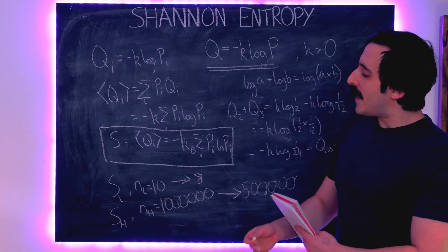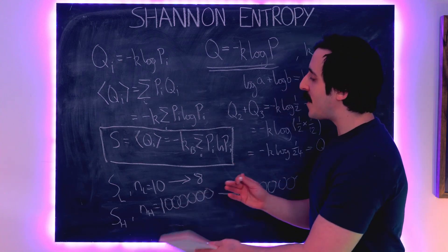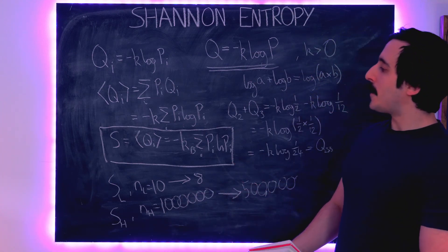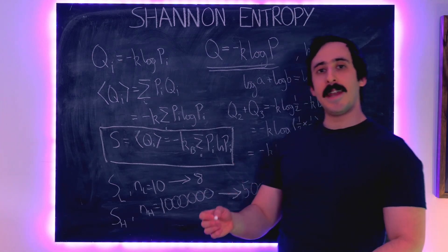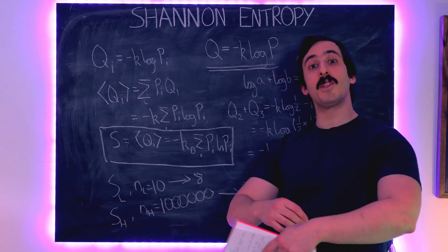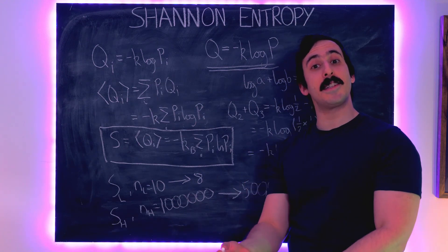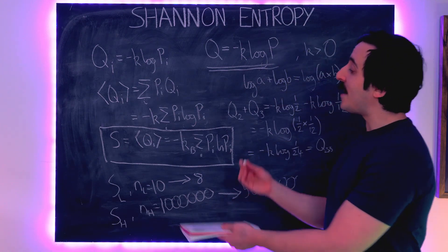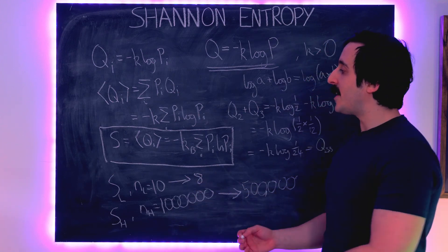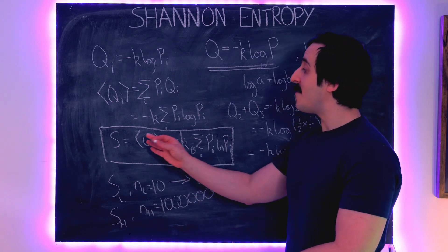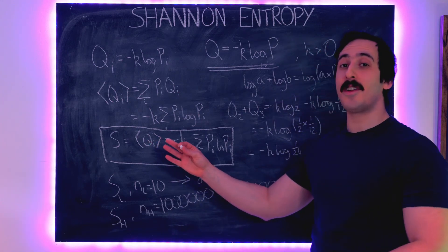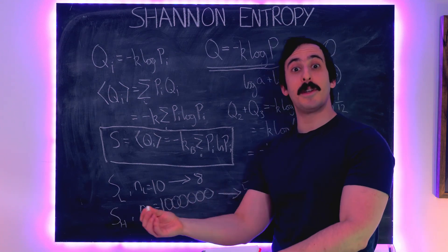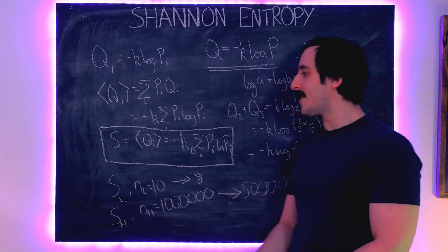So that is how these two definitions of entropy are linked. In statistical mechanics it relates to the number of possible microstates, and in information theory it is associated with the amount of information we gain on average following a true statement about the system.